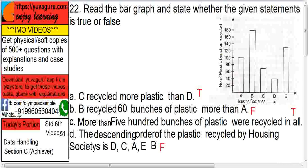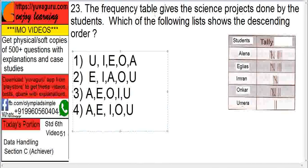Next one. The frequency table below gives the science projects done by various students. Which is the descending order? Descending means highest to lowest.